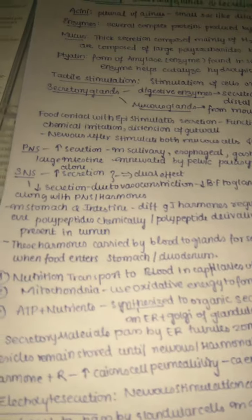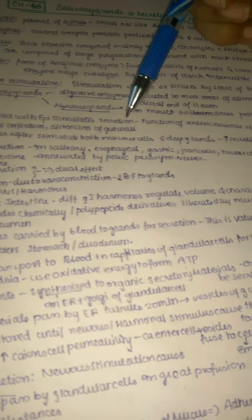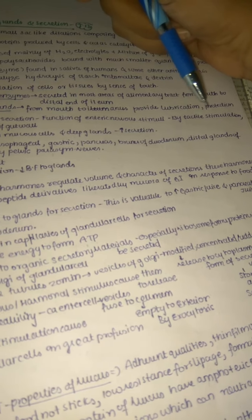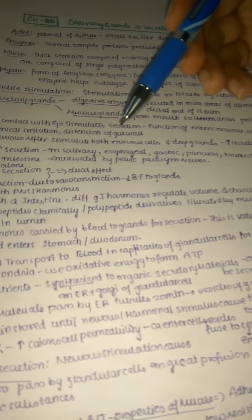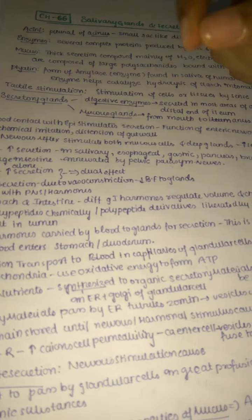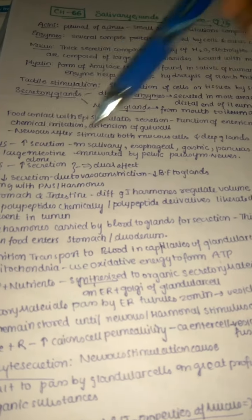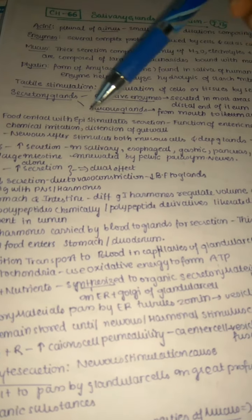Food contacting the epithelium stimulates secretion through the enteric nervous system via tactile stimulation, chemical irritation, and distension of the gut wall. Mucus secretion is stimulated by these three mechanisms — tactile stimulation by food, chemical irritation, or gut wall distension. Additionally, nervous reflexes stimulate both mucus cells and deep glands, increasing secretion.